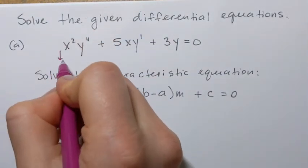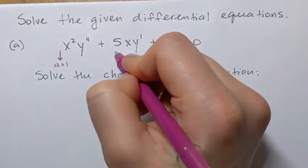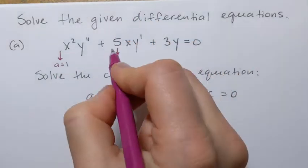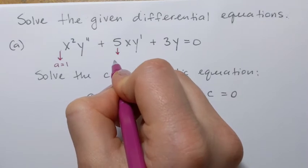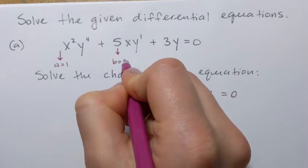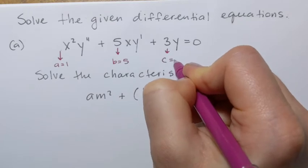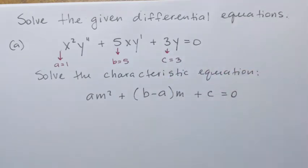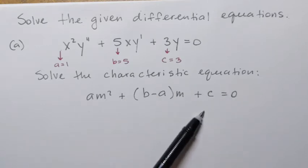For our first equation, a equals 1 from the second order term. B equals 5 from the middle term coefficient, and c equals 3. Once we have a, b, and c, we can write the actual characteristic equation.